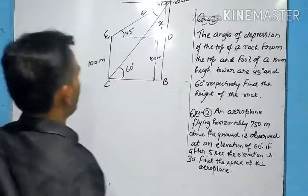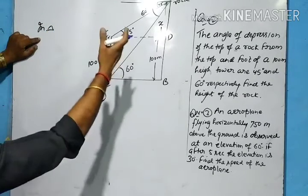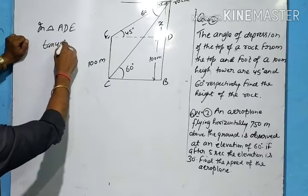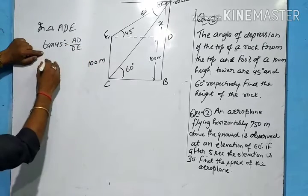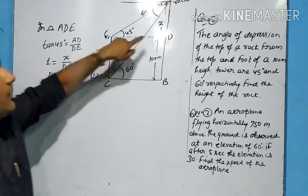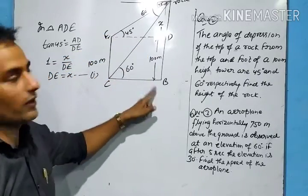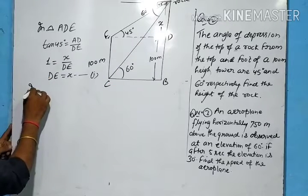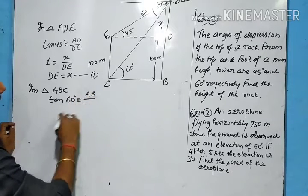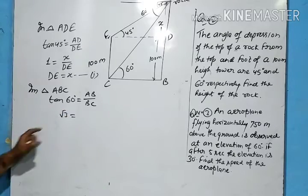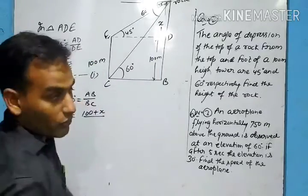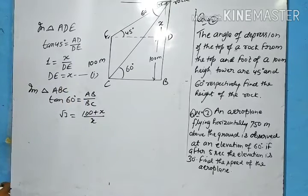AB is the height of the rock that we need to find. We have two triangles. Taking the smaller triangle ADE first: tan 45° = AD/DE. tan 45° is 1, so AD = x and DE = x — this is equation number one. We have DE, which equals BC. Now in triangle ABC: tan 60° = AB/BC. tan 60° is √3, and AB is 100 + x, so √3 = (100 + x)/BC. Since BC = DE = x, we substitute.